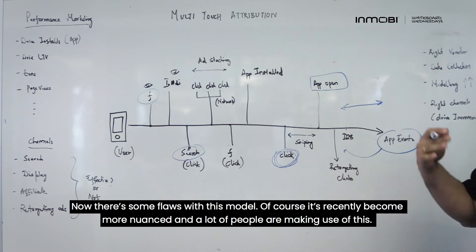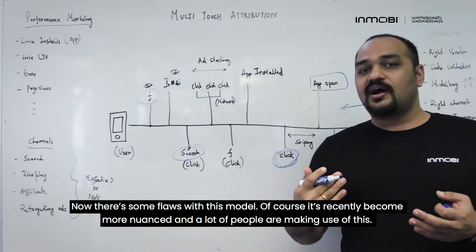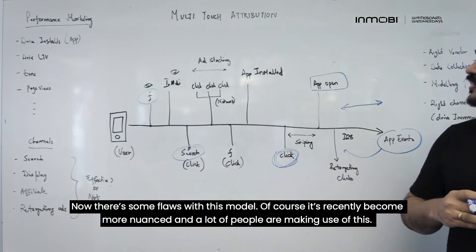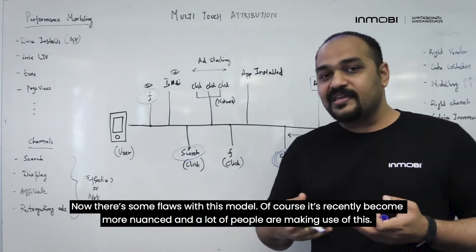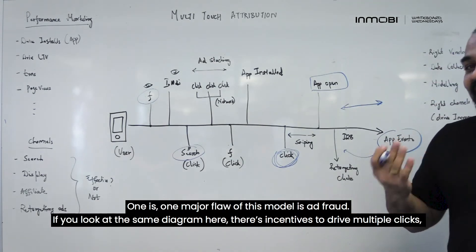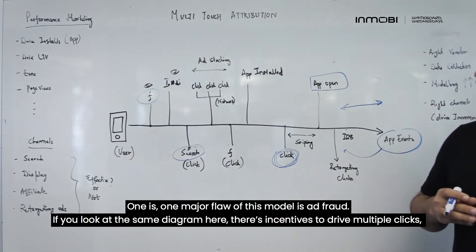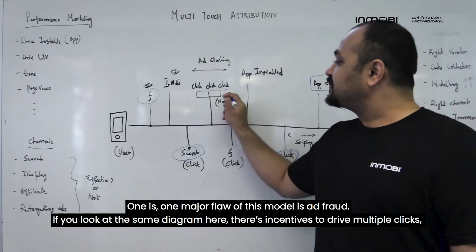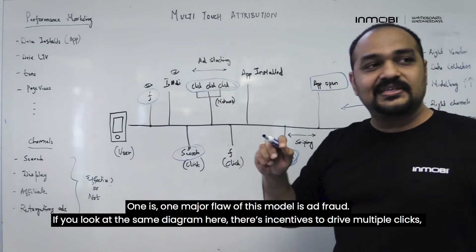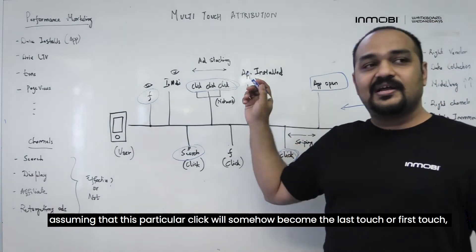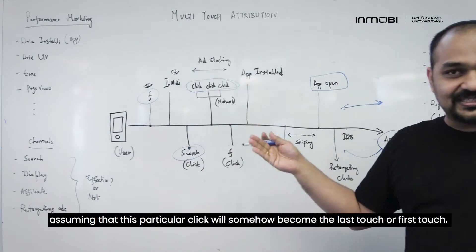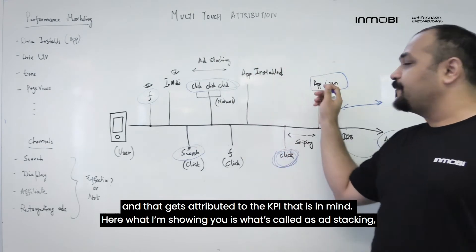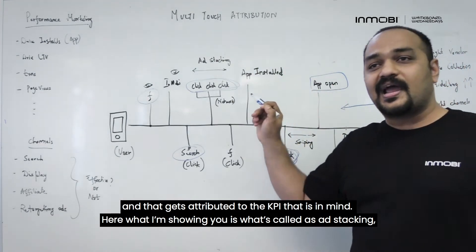Now there are some flaws with this model. One major flaw is ad fraud. If you look at the same diagram, there are intense incentives to drive multiple clicks, assuming that a particular click will somehow become the last touch or first touch, and get attributed to the KPI that is in mind.